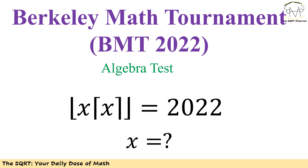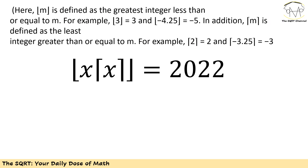Before talking about the solution, let me define floor and ceiling. The floor of m is defined as the greatest integer less than or equal to m. For example, floor(3) = 3, and floor(-4.25) = -5, because -5 is the greatest integer less than or equal to -4.25.